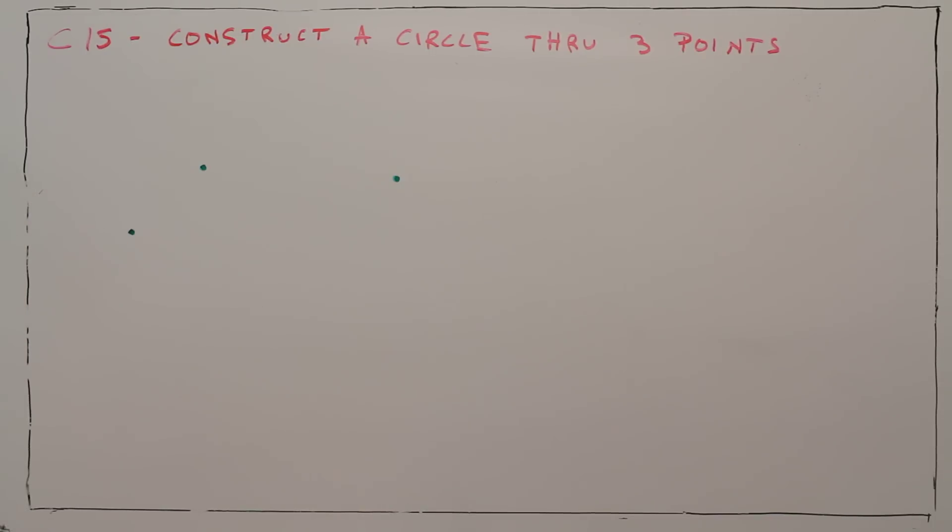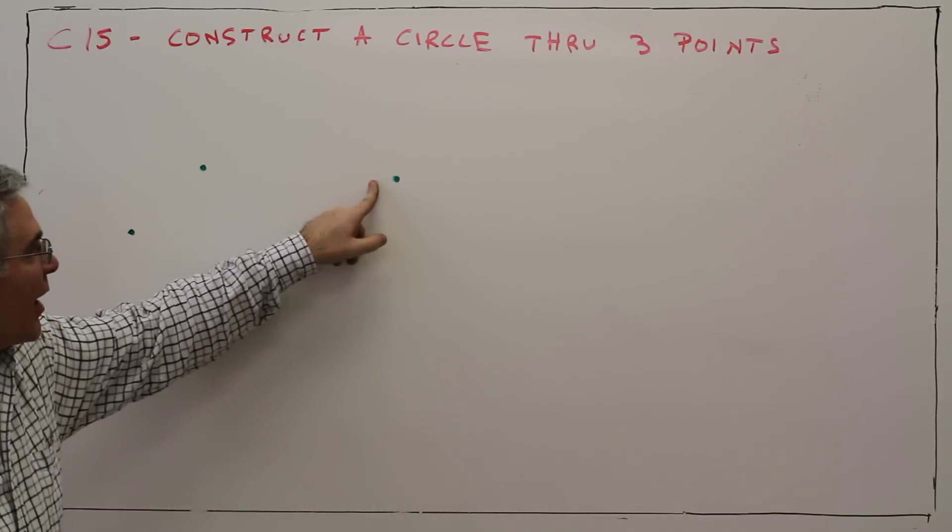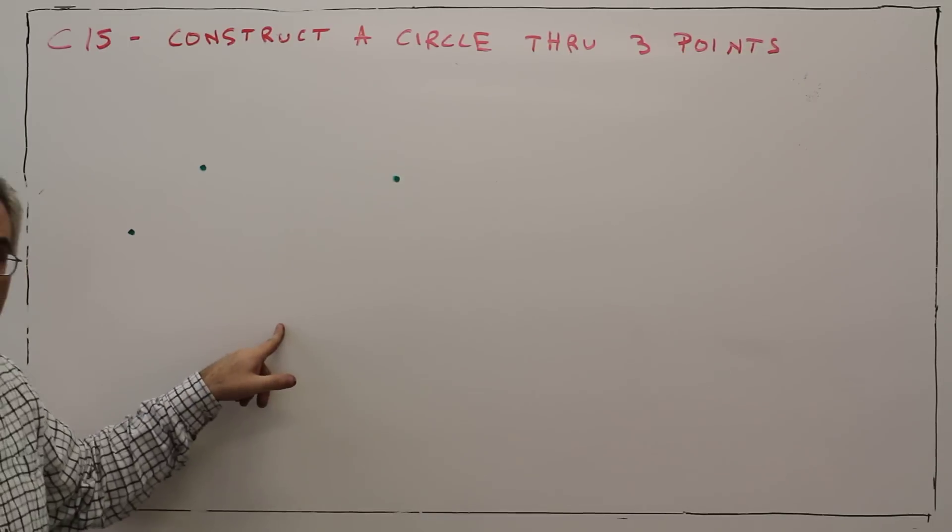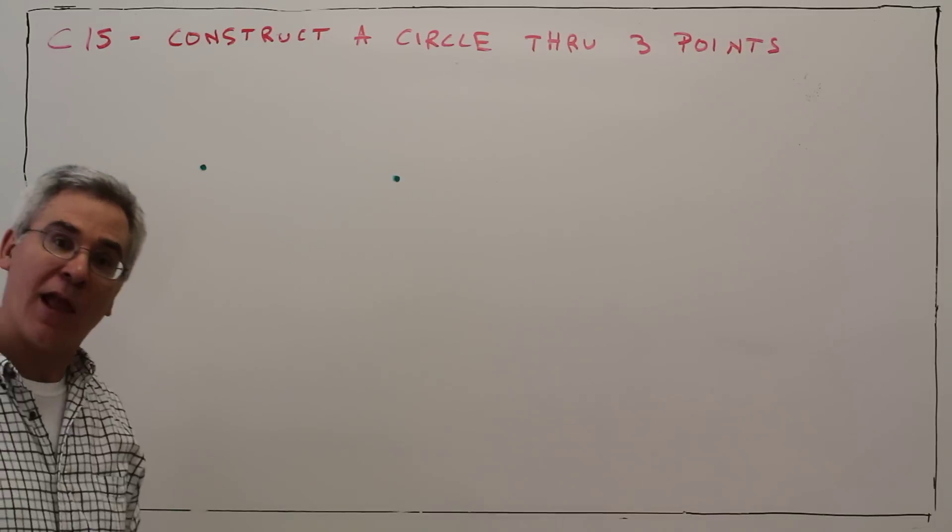Okay, so all we're going to do is draw a segment, construct a perpendicular bisector, draw a segment, construct a perpendicular bisector. Where those two perpendicular bisectors meet, that's the center of our circle, and we're done.